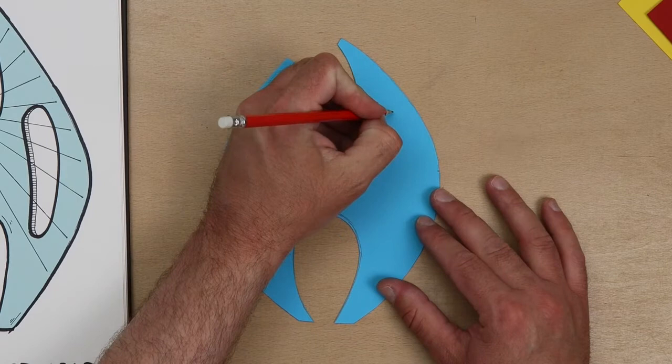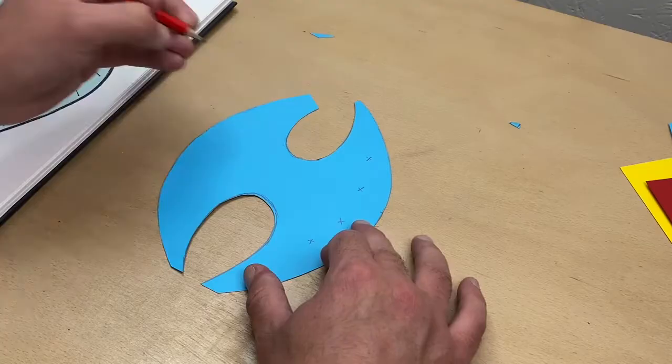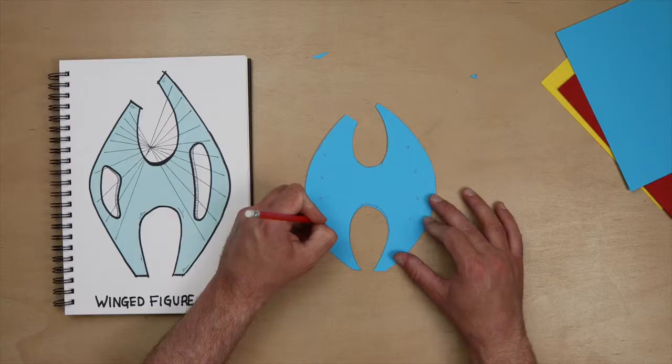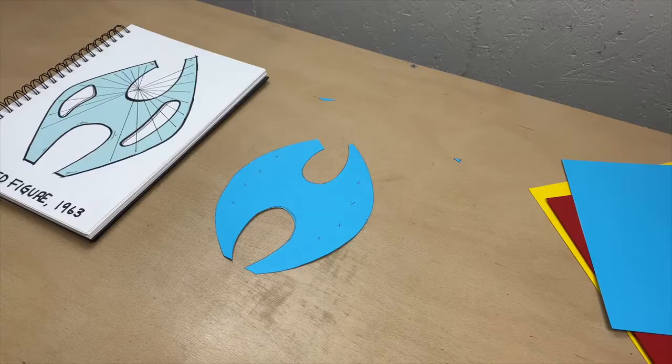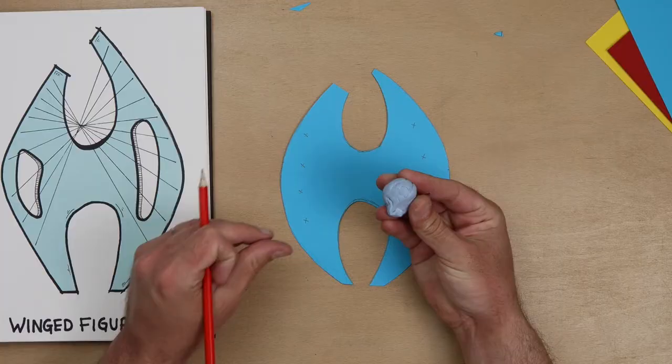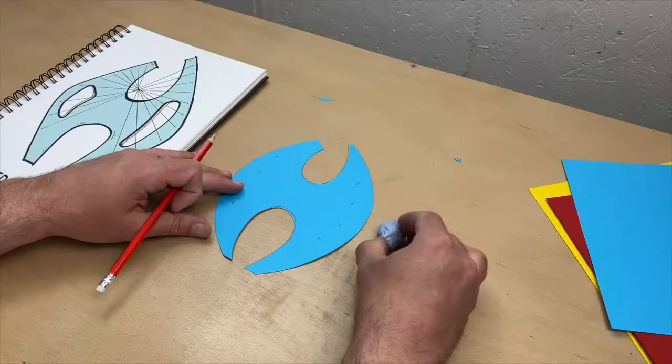Draw four crosses along each wing and try to keep them evenly spaced. Use your blue tack under the card to safely create a hole using your pencil.